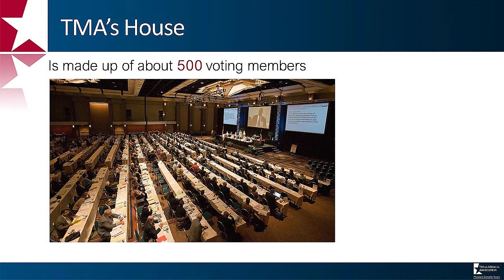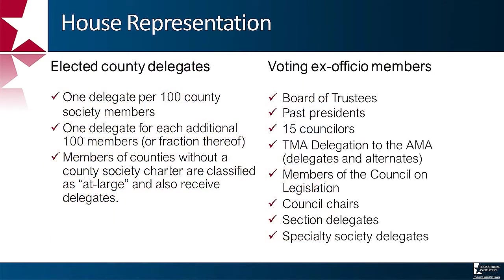So how does the House of Delegates work and what role do you play as a delegate? The House of Delegates is made up of 500 voting members. It is the legislative and policy-making body of the association, and its members include county medical society delegates and alternate delegates, as well as ex-officio members. Ex-officio members of the House include trustees, past presidents and speakers of the association, 15 counselors, delegates and alternate delegates to the AMA, members to the Council on Legislation, council chairs, section delegates, as well as specialty society delegates whose specialty societies have been approved by our House.